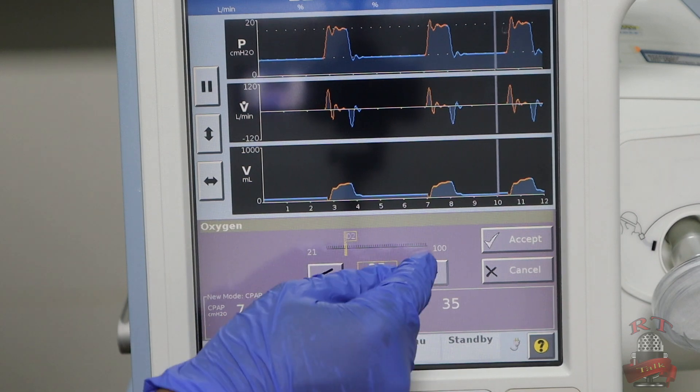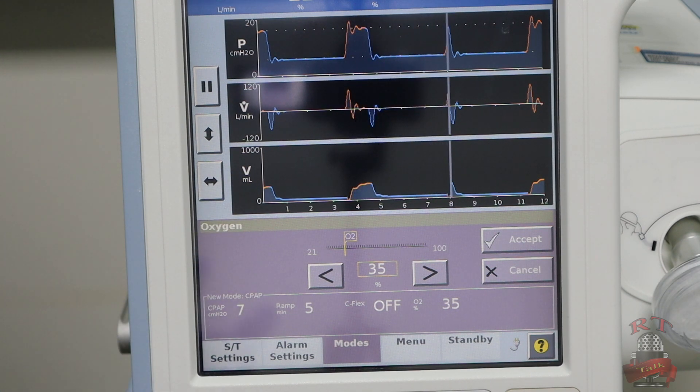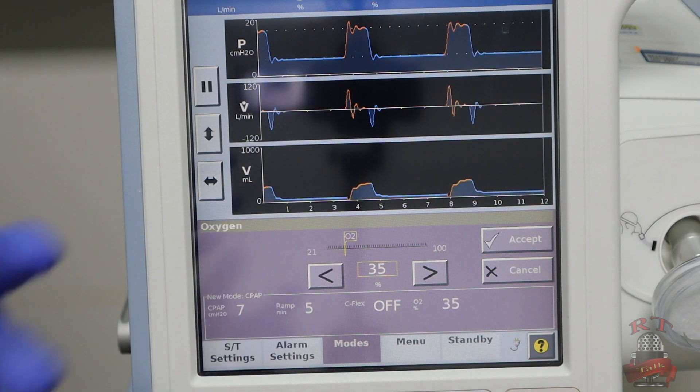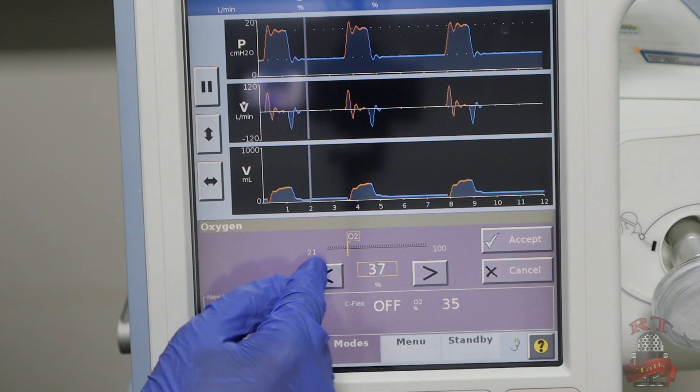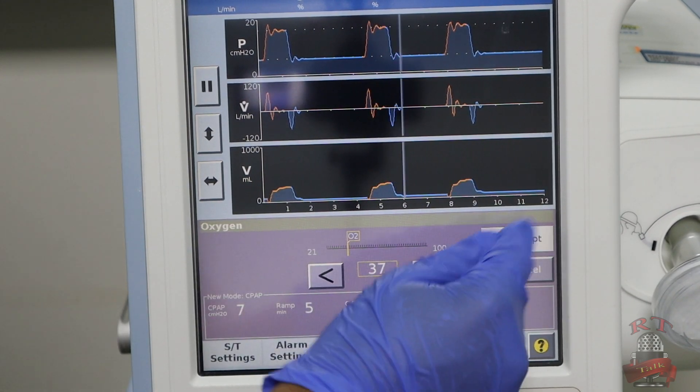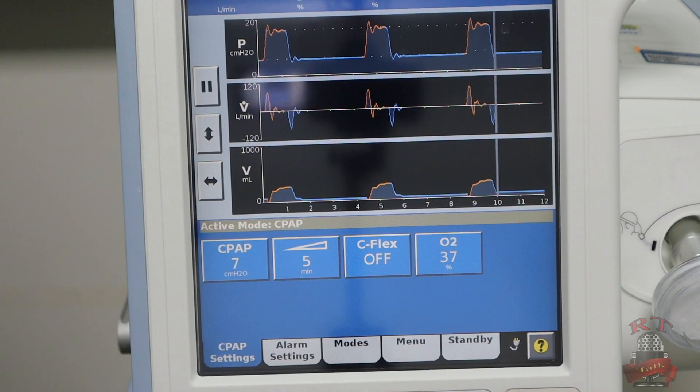The last thing is the percentage of oxygen you want. We always want to keep our saturation more than 92. So you will ask your doctor what saturation level is needed for your patient, and you will adjust your percentage of oxygen accordingly. After that, you will activate CPAP mode. So now you are ready on CPAP mode.